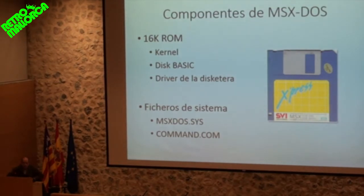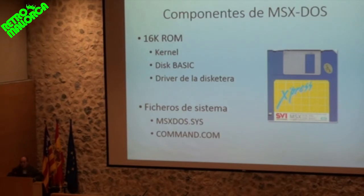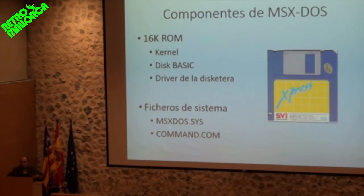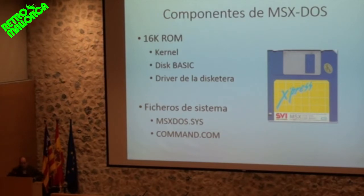What did MSX-DOS consist of? First, MSX-DOS was distributed with a ROM — for two reasons. The first is that in an MSX, all code that runs at startup must be in a ROM; there is no other way. You might say, but I could put a diskette in an MSX with a disk drive and it would boot from the diskette. Yes, because there was a ROM that was responsible for reading the diskette and executing the code on it. That was the trick. There were also a couple of system files — MSX-DOS.SYS and COMMAND.COM, the command interpreter.